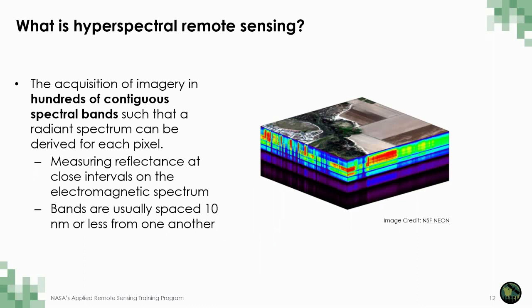What really is hyperspectral remote sensing? It is the acquisition of images in use of contiguous registered spectral bands. Although most hyperspectral sensors measure hundreds of wavelengths, it's not the number of measured wavelengths that defines a sensor as hyperspectral — rather, it's the narrowness and contiguous nature of measurements. Essentially, hyperspectral data is characterized by many bands measuring reflectance at close intervals along the electromagnetic spectrum to better characterize spectral signatures and reflectance of land cover, water, and the atmosphere. Hyperspectral imagery especially refers to data captured with bands spaced 10 nanometers or less from one another.